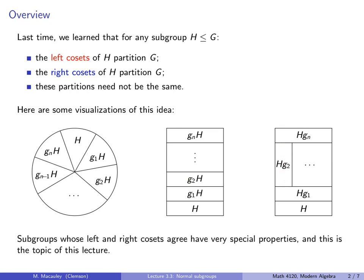Subgroups whose left and right cosets agree, in other words, not a subgroup like this H, which have very special properties, and this is the topic of this lecture.